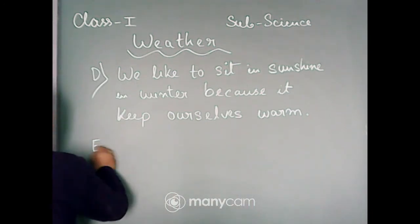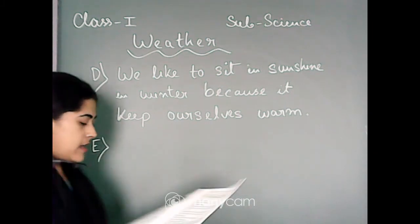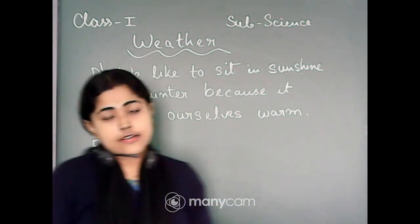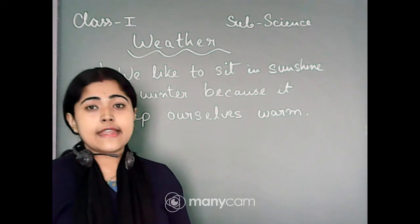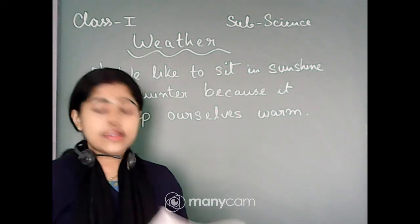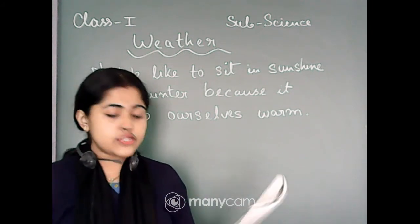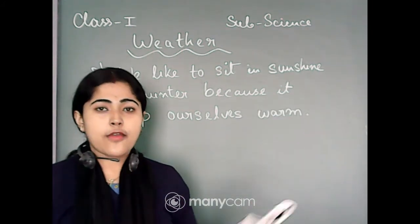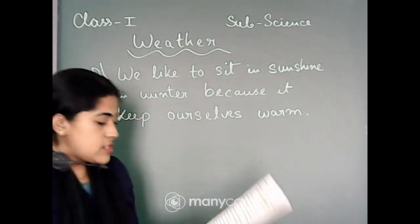Next is question number E. That is a 'Value Corner' question — tick the correct answer. Read the statement first and choose the correct option from your book.